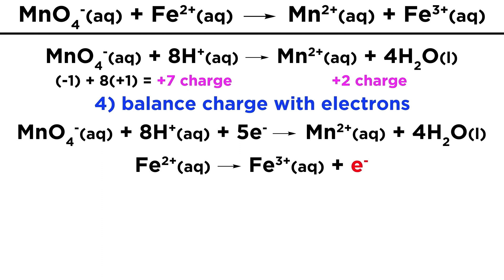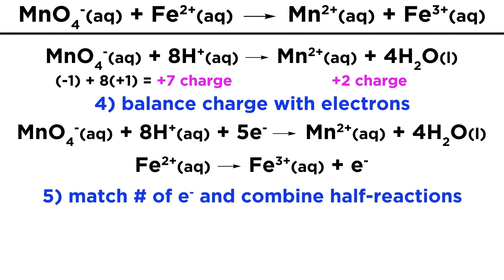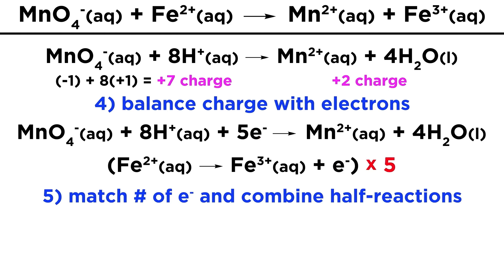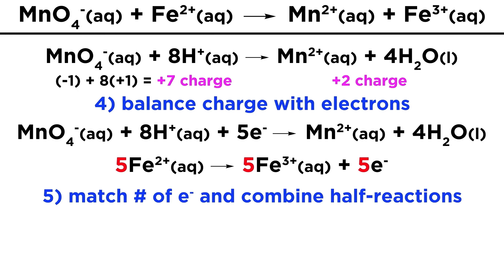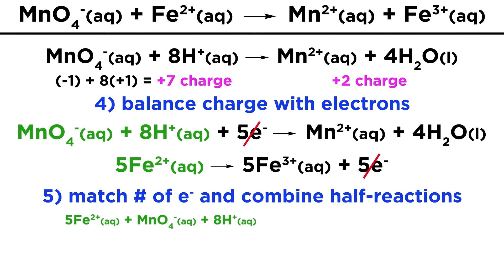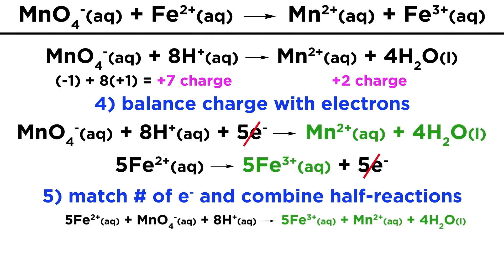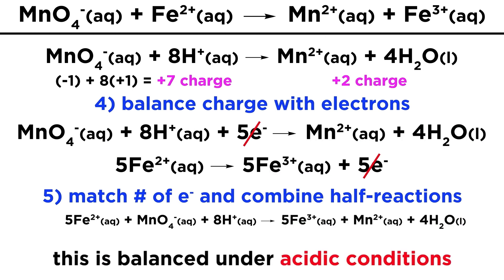For the oxidation half-reaction we have to add electrons as well. Since the iron 2+ ion loses 1 electron to become iron 3+, we need to put an electron on the right side to balance the charge. Now the half-reactions are completely balanced. Next, we will want to combine the half-reactions, but in order to do so we need the electrons in each to match up, since the electrons lost in oxidation are the ones used in reduction. Since there are 5 electrons in the reduction, we have to multiply the oxidation by 5. Now we are ready to combine them — everything on the left of both half-reactions goes on the left, and everything on the right goes on the right, without the electrons, since 5 on each side means they cancel out. We will see that it is balanced, which means this is the balanced redox reaction under acidic conditions.